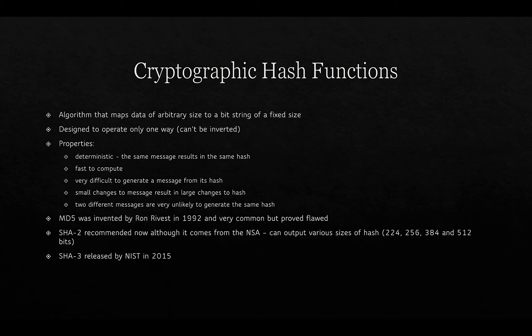Cryptographic hash functions are algorithms that map data of arbitrary size to a bit string of fixed size. You can take a file of any length, hash it, and it will always produce a fixed-size output. They are one-way — once you've hashed something, it is impossible to recreate the content from that hash. Ideally, no two different inputs should produce the same hash, though this can happen very rarely.